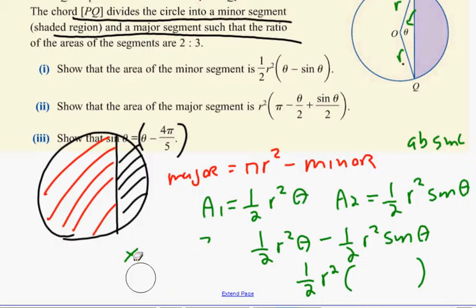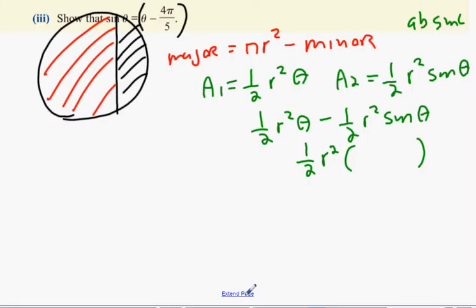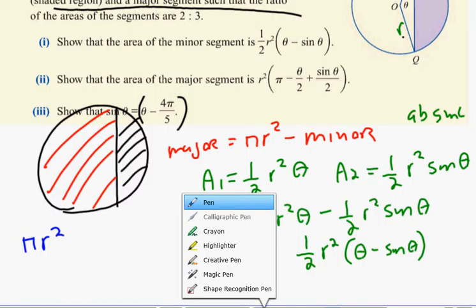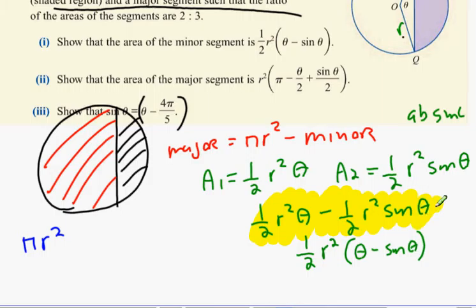To get the shaded part we took A2 away from A1. So, a half r squared theta minus a half r squared sine theta. What's next? If they don't cancel, you factorize them out. In the same way you have xy plus xz, you take the x's out and you're left with y plus z. So, a half r squared times theta minus sine theta. Show that the area of the major segment is this much here. Major is pi r squared minus all of this. Minus all of that.